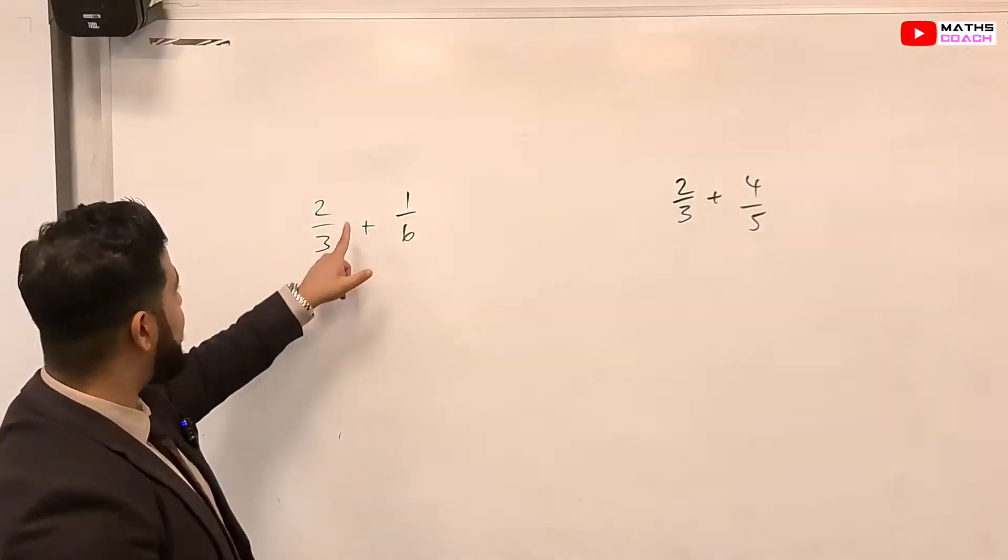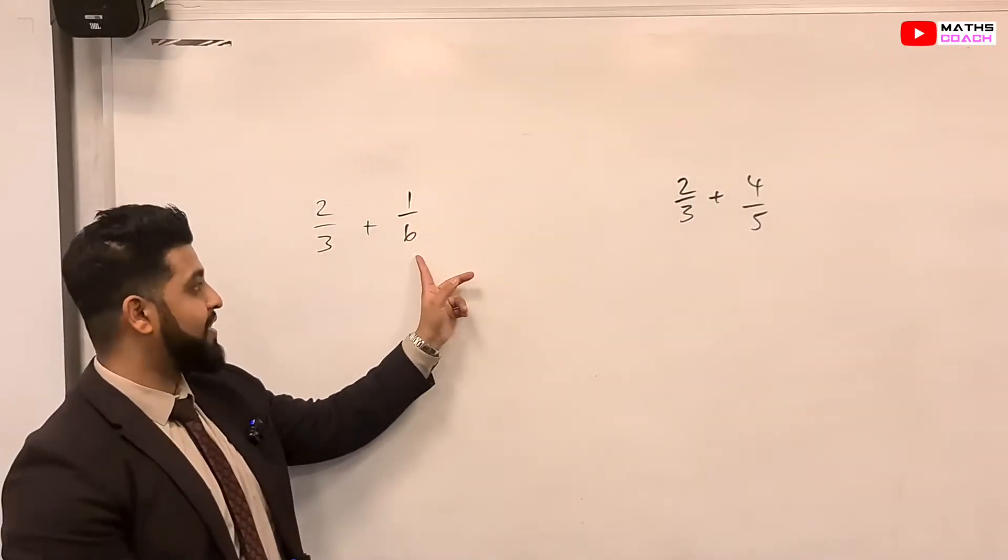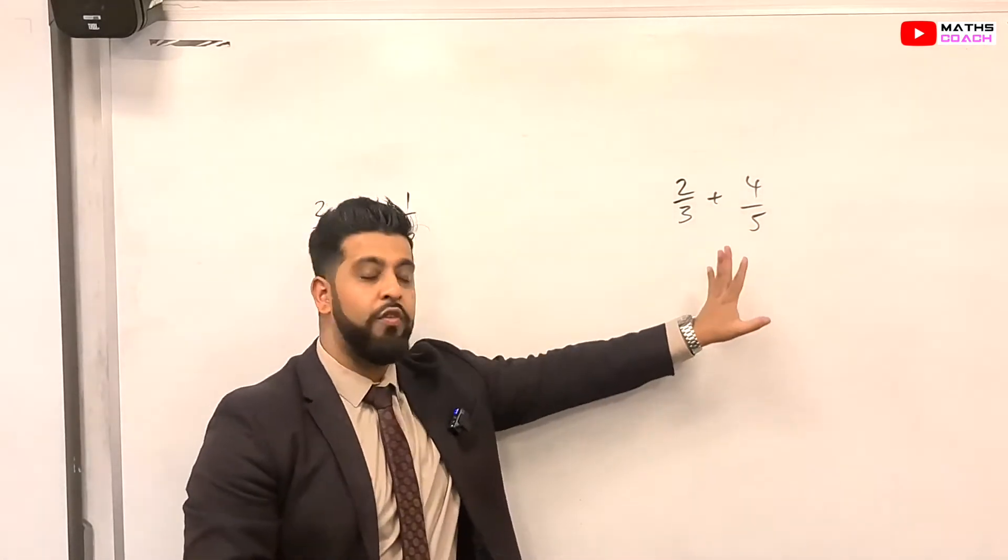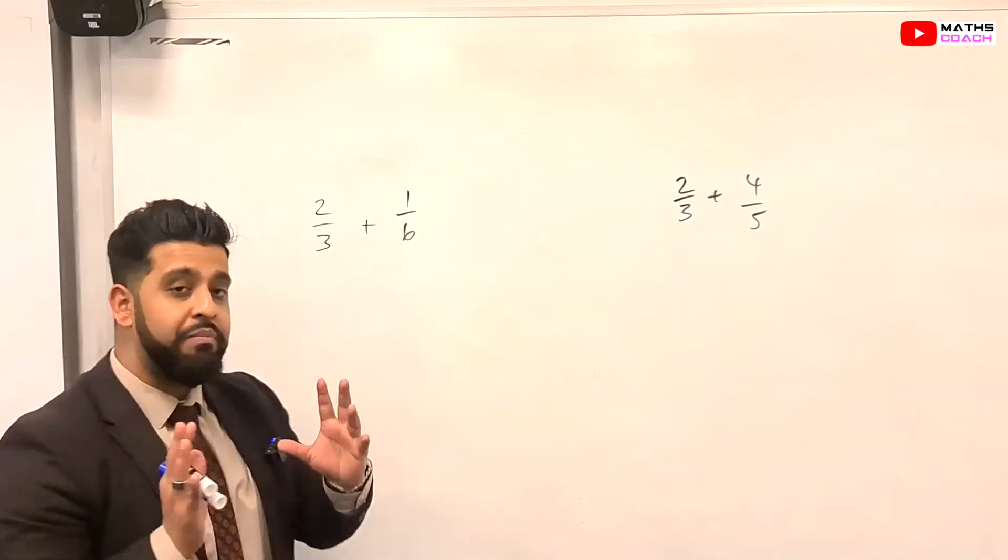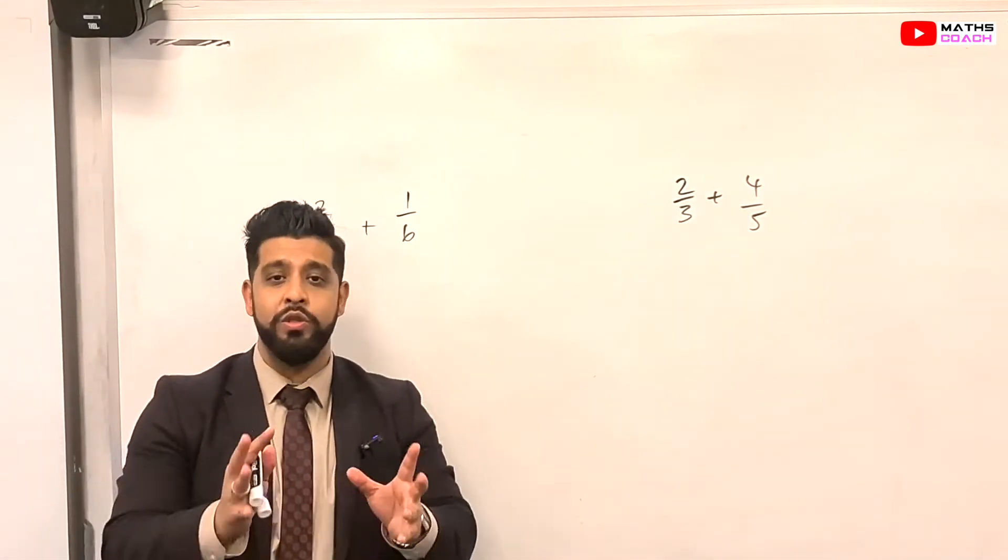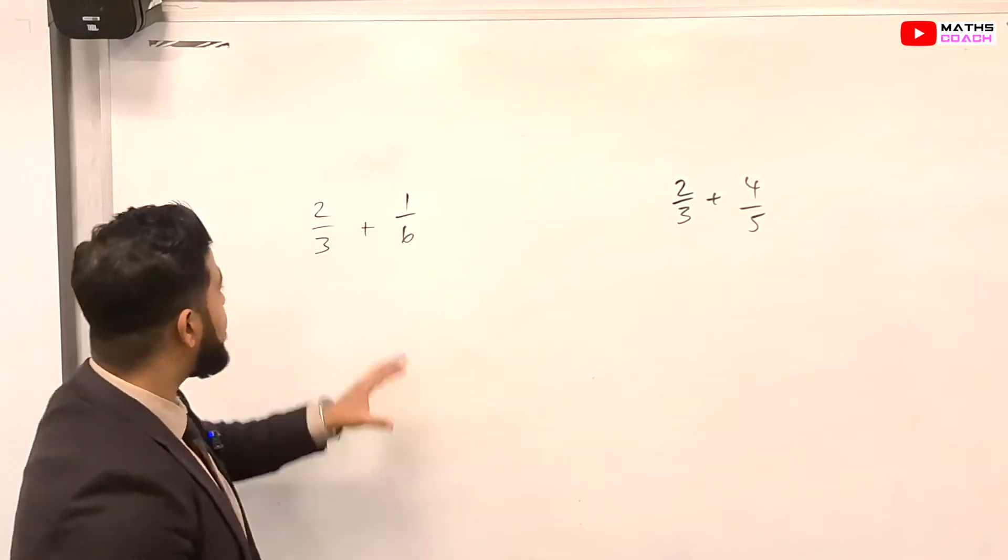So behind me here, we have 2 over 3 plus 1 over 6, and we also have 2 over 3 plus 4 over 5. Now, both of them will present their own challenges, which we will be looking at shortly.